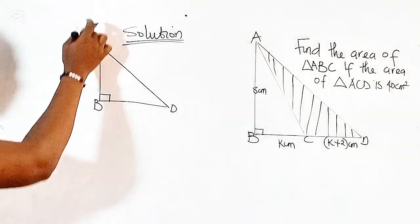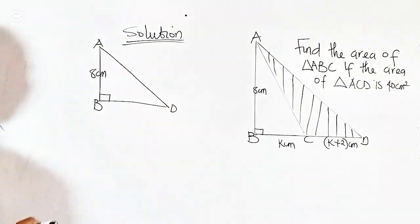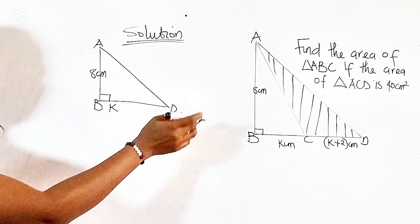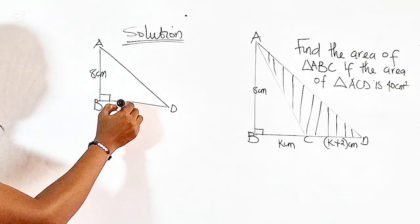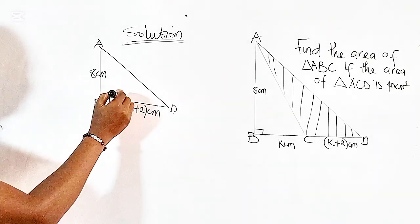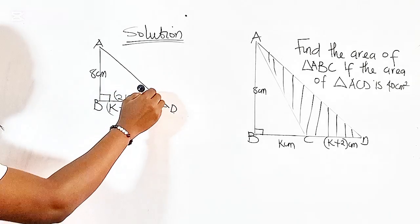So length AB is given to us as 8 cm. And length BD is given to us as K plus K plus 2, that's the total length, which equals 2K plus 2 cm.